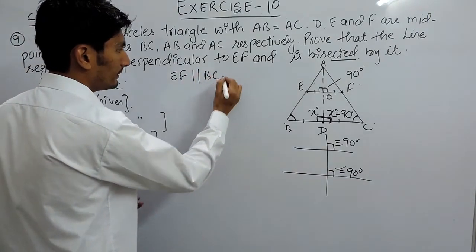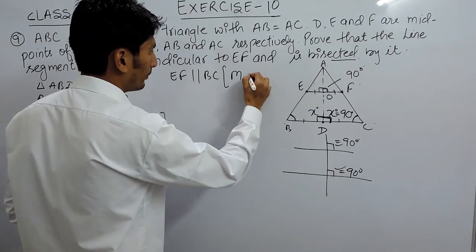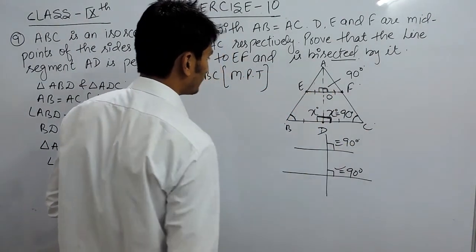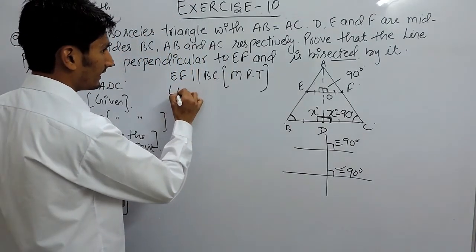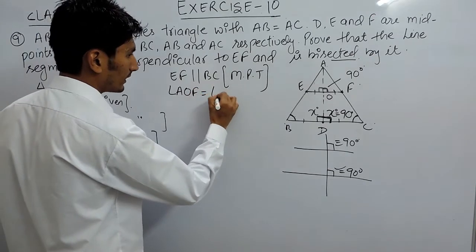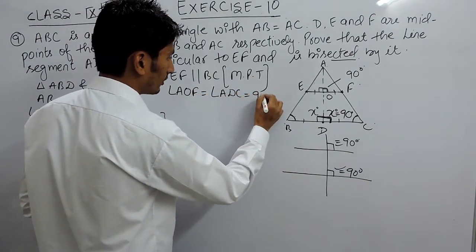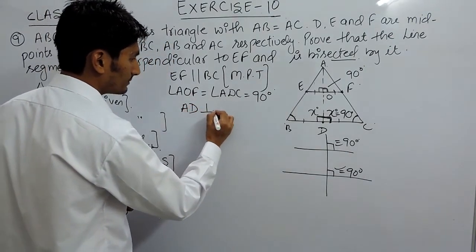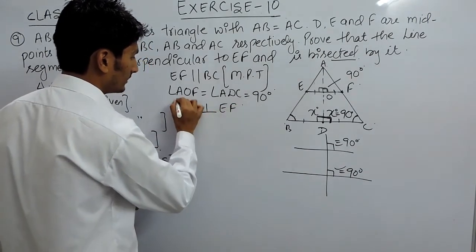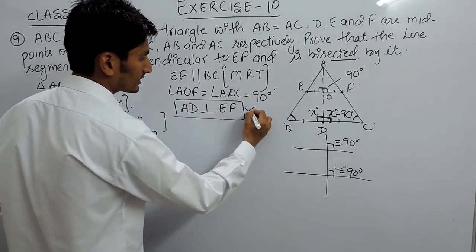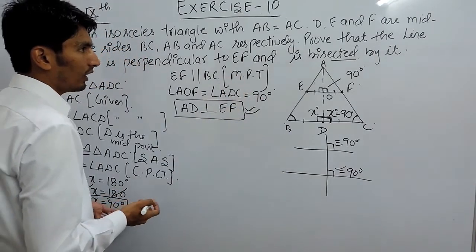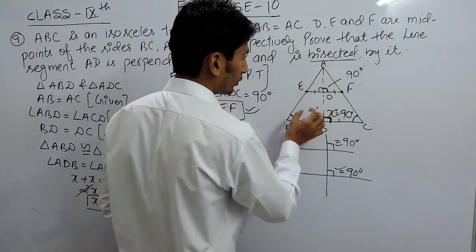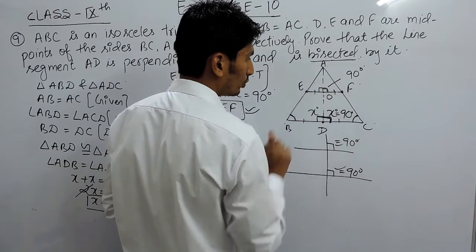So EF is parallel to BC, by the midpoint theorem, because joining the midpoints gives a line parallel to the third side. So angle AOF equals angle ADC, which is 90 degrees, proving AD is perpendicular to EF. This is the first part proved. Now we have to prove that AD also bisects EF, meaning EO equals OF.